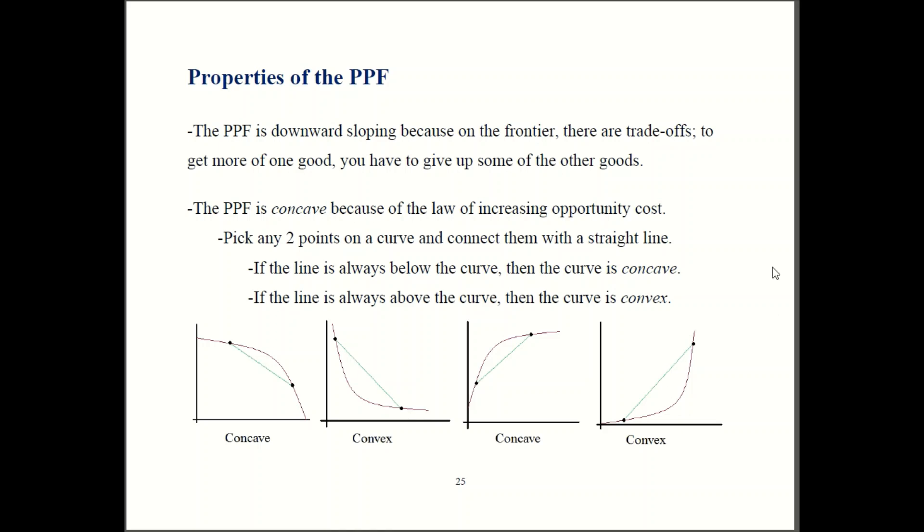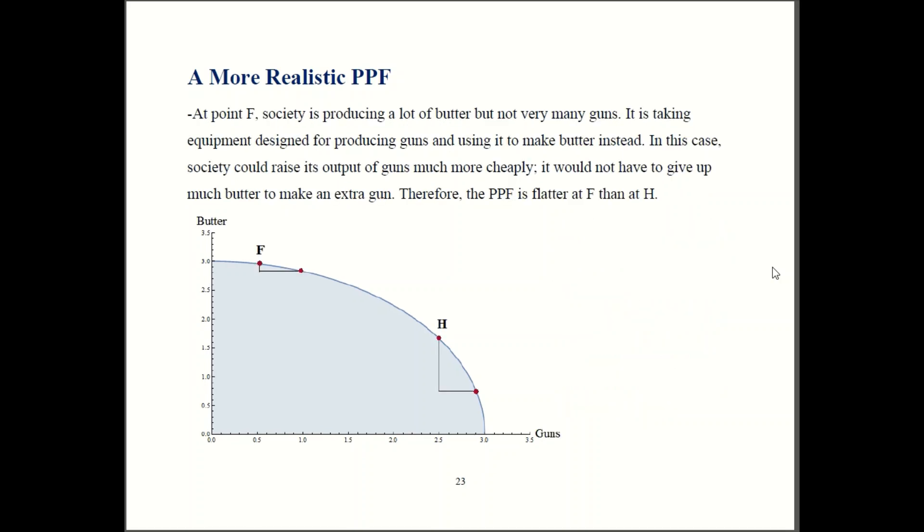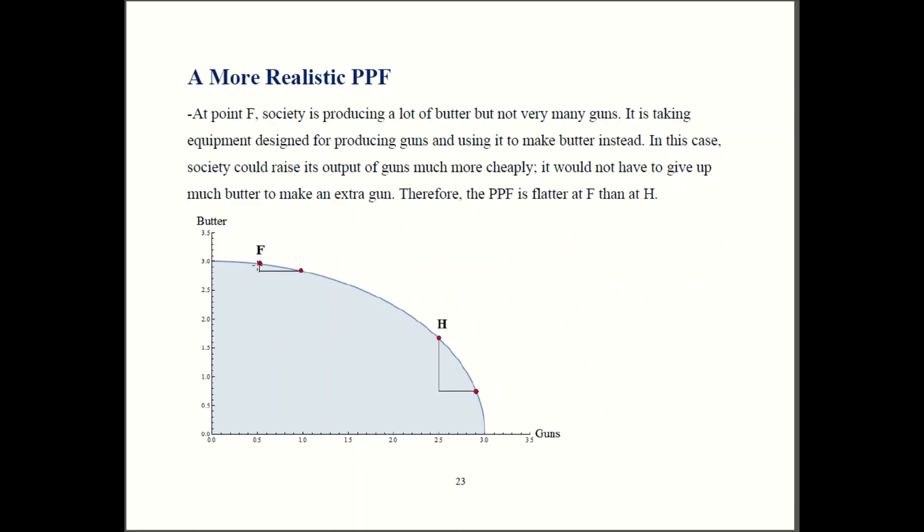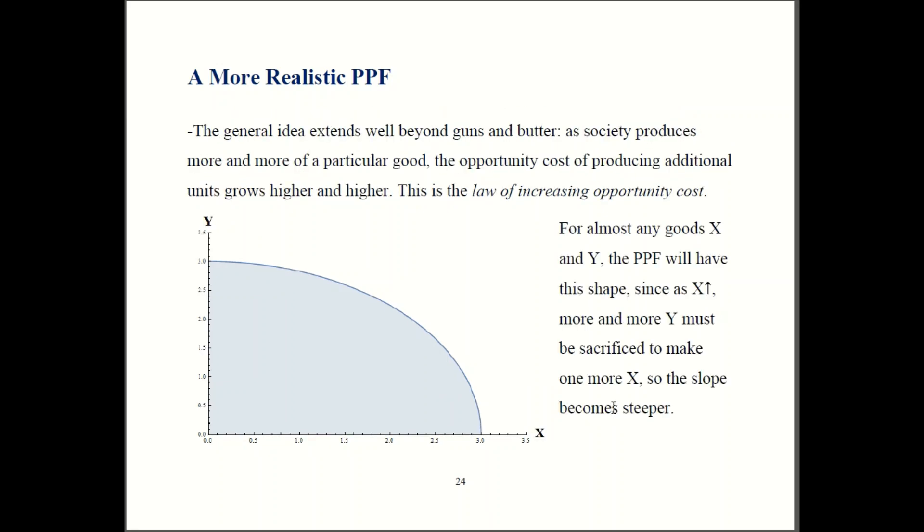All right, so now we know the difference between concave and convex. I argued back a couple of slides ago that it's going to look like this. So what kind of shape is that? That's this one. It's concave. So I picked two points, F and H. If I join F and H with a straight line, my straight line would be below the curve. If I pick these guys, it's always below the curve too. So this is concave. So in short, because of trade-offs, the PPF has a negative slope. Because of increasing opportunity cost, the PPF is concave.